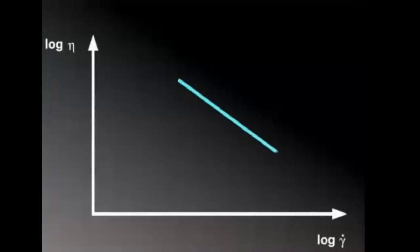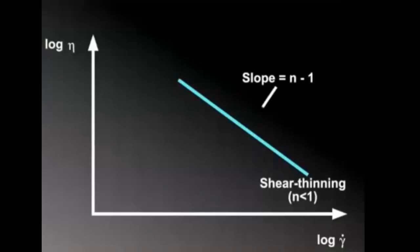Power law fluids are best described on a log-log plot of viscosity versus shear rate. If n is less than 1, the fluid is shear-thinning because as gamma dot increases, the viscosity will decrease.